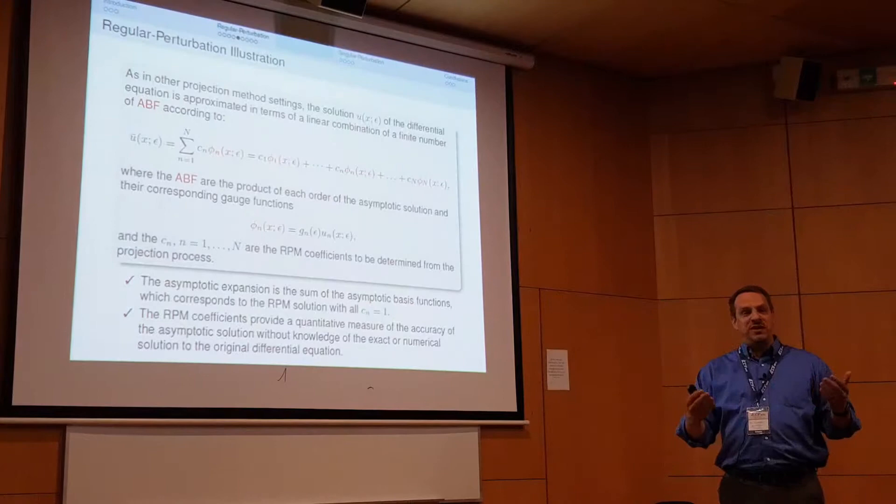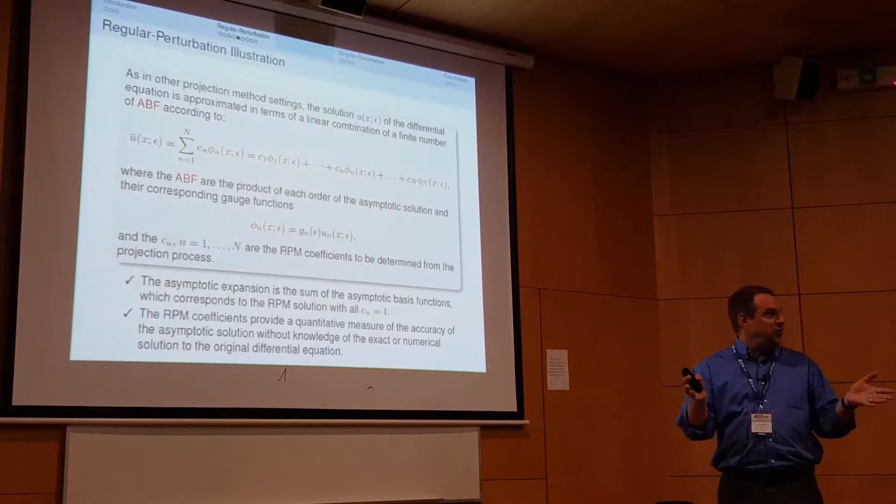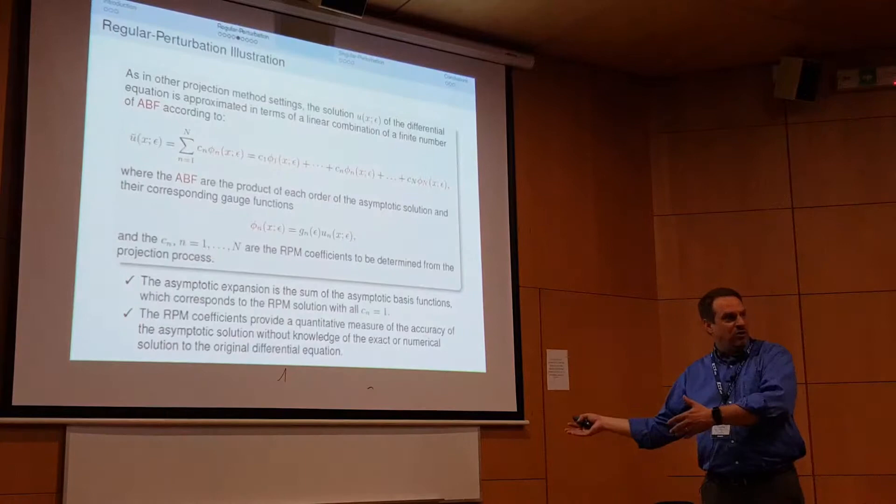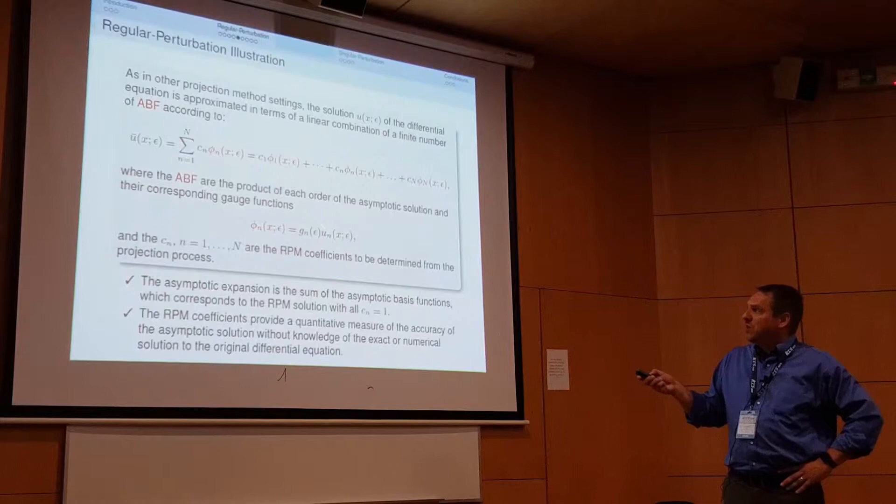One of the big problems with reduced order methods based on POD is that every time you change the system parameters, you have to redo the POD mode calculation and then redo your reduced order model. Here, the parameter — in this case epsilon — and its dependence are contained within the basis functions, so that issue is avoided.